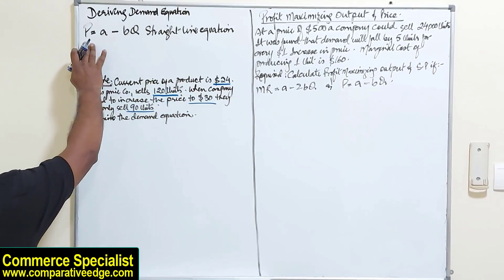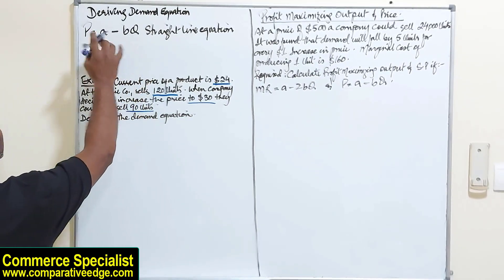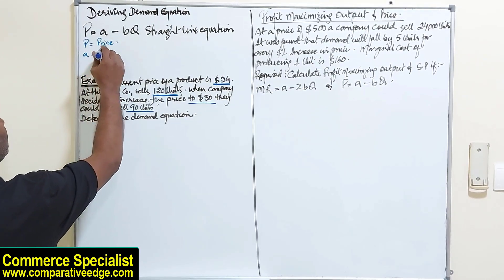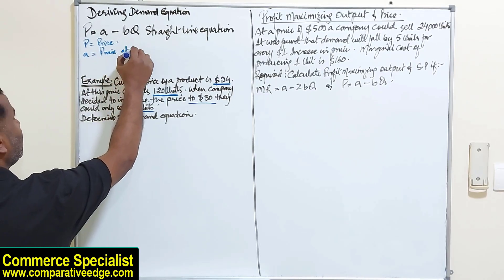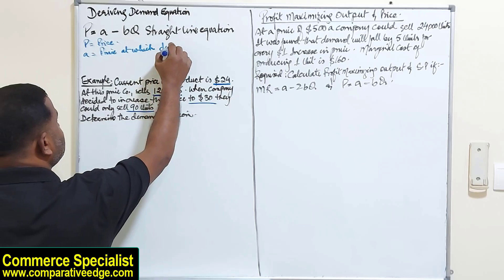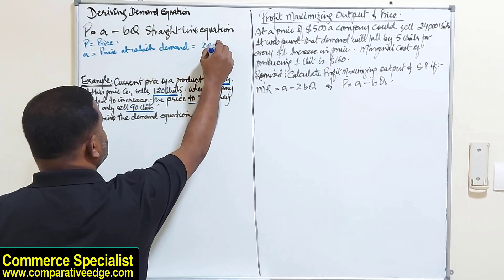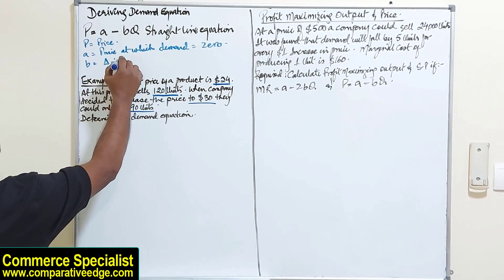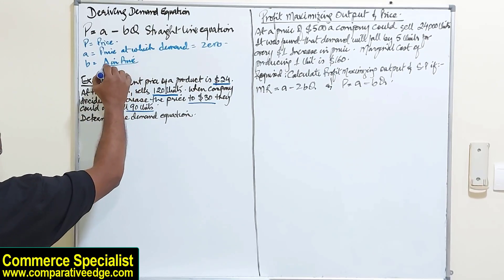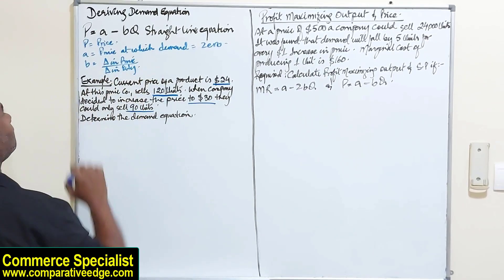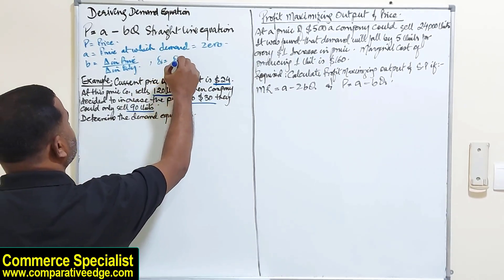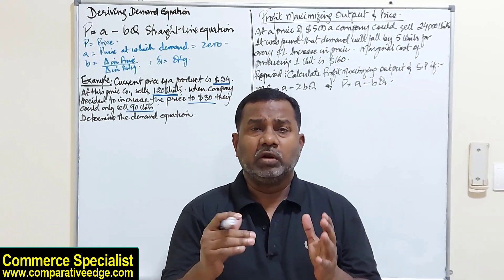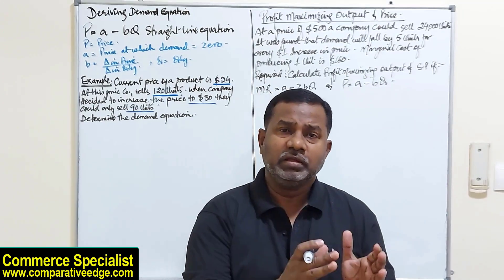The demand equation, especially in ACCA exams, is given as P = A − BQ, where P is the price, A is the price at which demand will be zero, B is the change in price divided by the change in quantity, and Q is the quantity demanded. Now that we know the equation, we can calculate A first, then B.